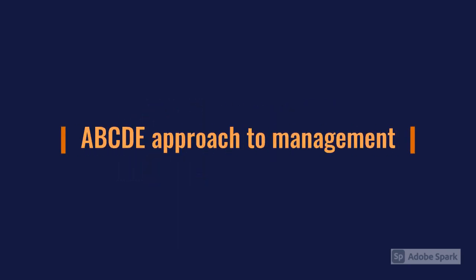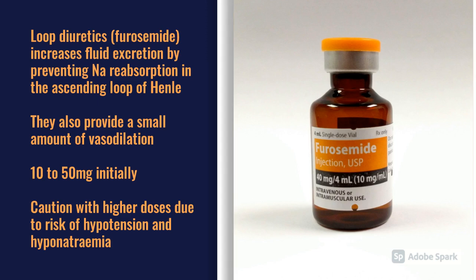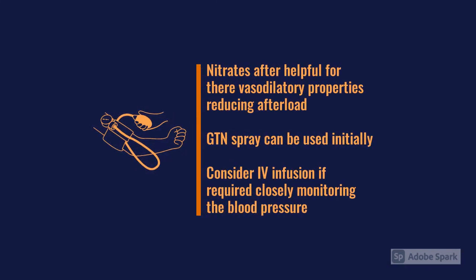Key in terms of management: diuretics are important, so we often use furosemide IV, anywhere between 10 and 50 milligrams initially depending on the degree of fluid overload — this increases fluid excretion and reduces afterload. Be aware high doses can cause hypotension and later hyponatremia. Nitrates are also helpful — they're vasodilatory, reduce preload and afterload. A GTN spray can be used in the community, but in hospital we often use IV isosorbide nitrate infusions, keeping a close eye on blood pressure.